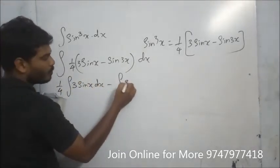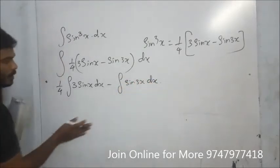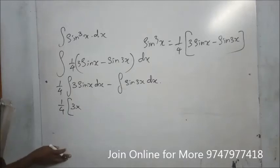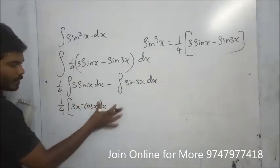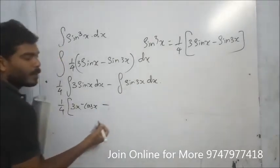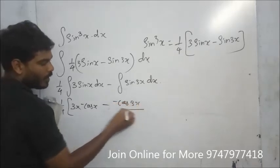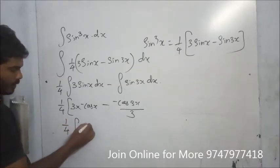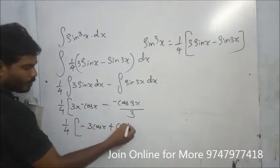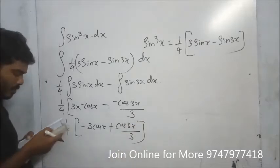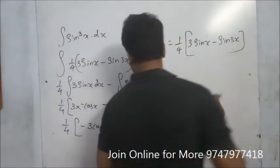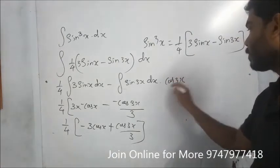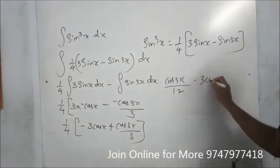So the integral of sin³x becomes (1/4) times the integral of (3 sin x minus sin 3x) dx. That gives (1/4) times [3 times integral of sin x minus integral of sin3x]. Integrating: (1/4) times [minus 3 cos x plus cos3x by 3], which simplifies to cos3x by 12 minus 3 cos x by 4, plus c.